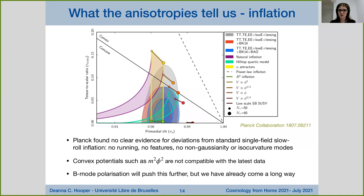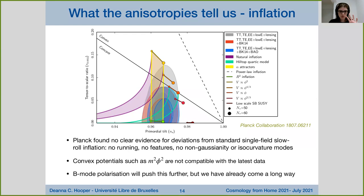The progress in constraining inflation over just 15 years is remarkable. Comparing the allowed parameter space from the WMAP three-year release to the latest Planck 2018 results, the parameter space has shrunk dramatically. In the future, having a B-mode polarization measurement would allow us to improve bounds on the tensor-to-scalar ratio by nearly one order of magnitude. So while we've come far, these constraints are expected to improve even more with future B-mode polarization measurements.